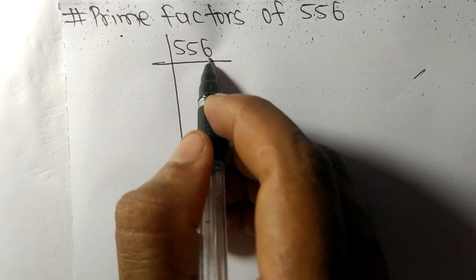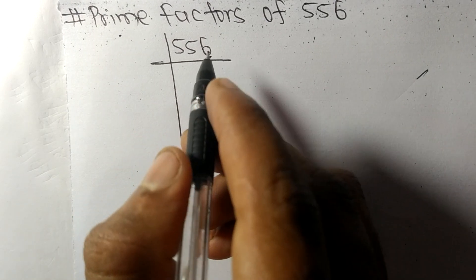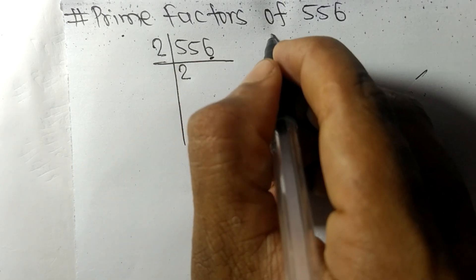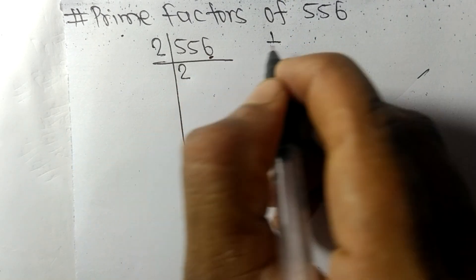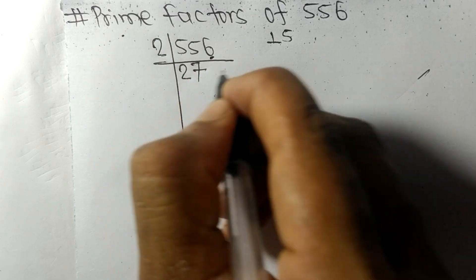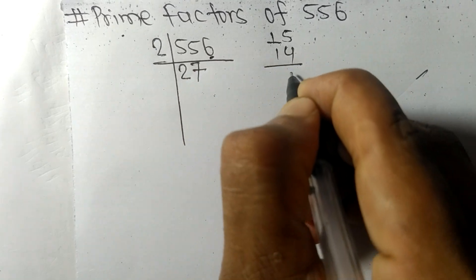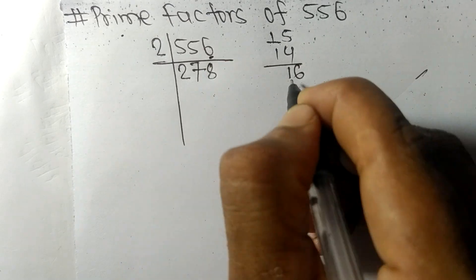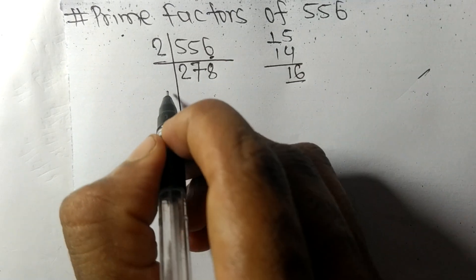2 times 2 is 4, remainder 1, and this 5, 15. 2 times 7 is 14, remainder 1, and this 6, 16. 2 times 8 is 16. So now we have even number 8 at last, so it is divisible by 2.